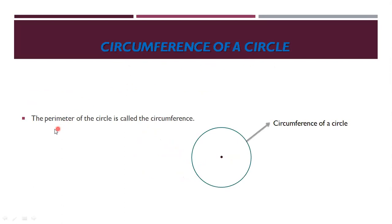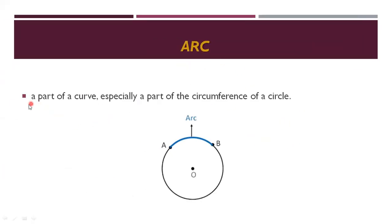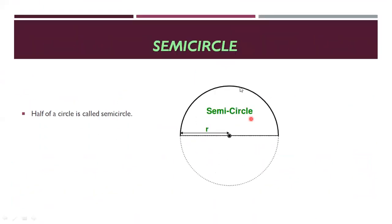Next, circumference of a circle: the perimeter of the circle is called circumference. Arc: a part of the circumference of a circle — for example, from point A to point B on the circle is called an arc. Semicircle: half of a circle is called a semicircle.